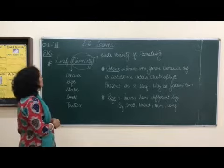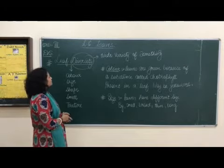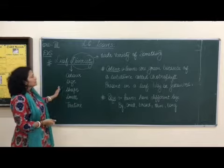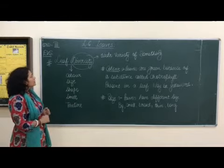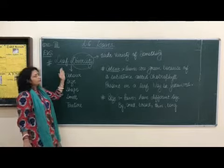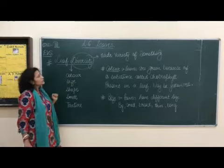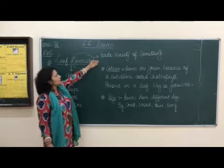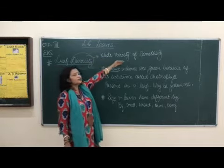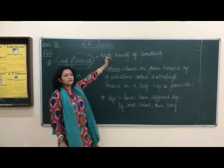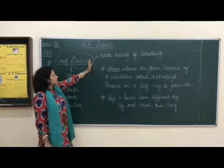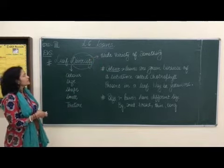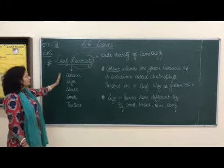Children, we are here ready with the second part of your chapter on leaves. Now we are talking about leaf diversity. Diversity means a wide variety of something. You will find lots of variety — that is called diversity. Here we are talking about variety of leaves.